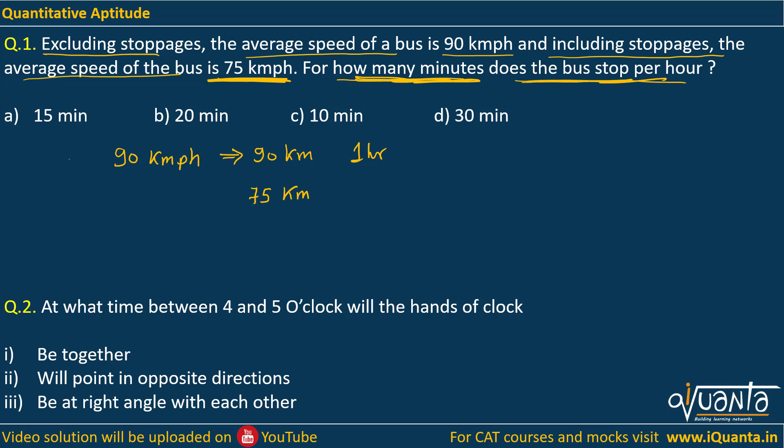Let it be x hours. When we cross multiply and solve, we will be getting x equal to 5 by 6 hours, or if we convert them into minutes, we'll be getting 50 minutes over here.